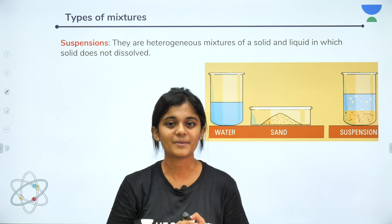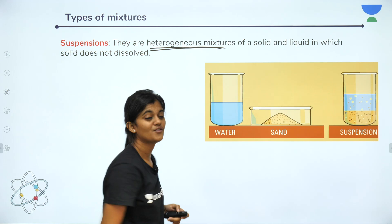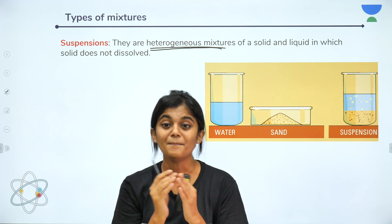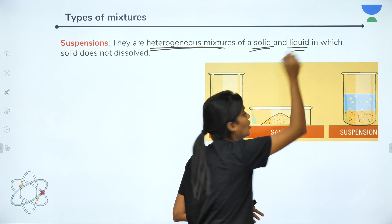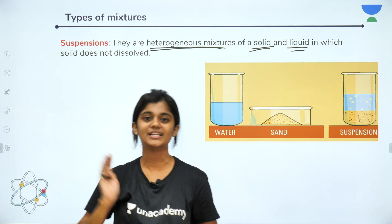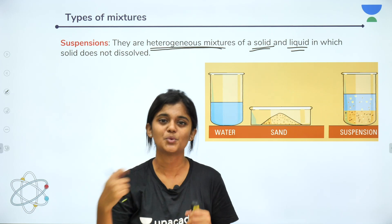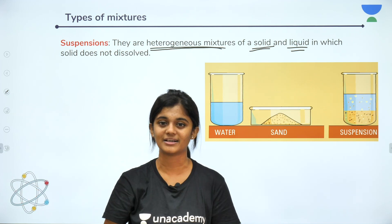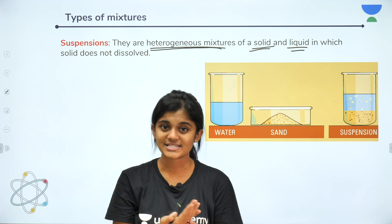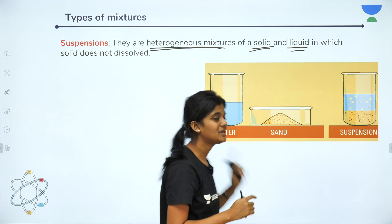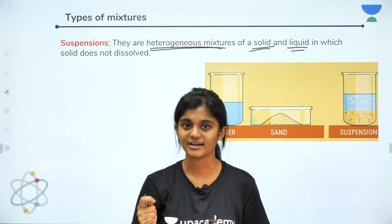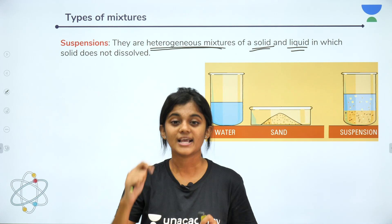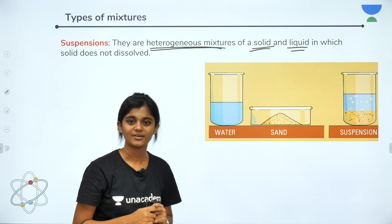Next is suspension — a category of heterogeneous mixture. In suspension, you have a solid and a liquid where the solid does not dissolve in the liquid. For example, when you add sand to water, the sand settles at the bottom of the beaker — it does not dissolve in the water. In solution the solute completely dissolves, but in suspension the solid does not dissolve completely in the solvent.